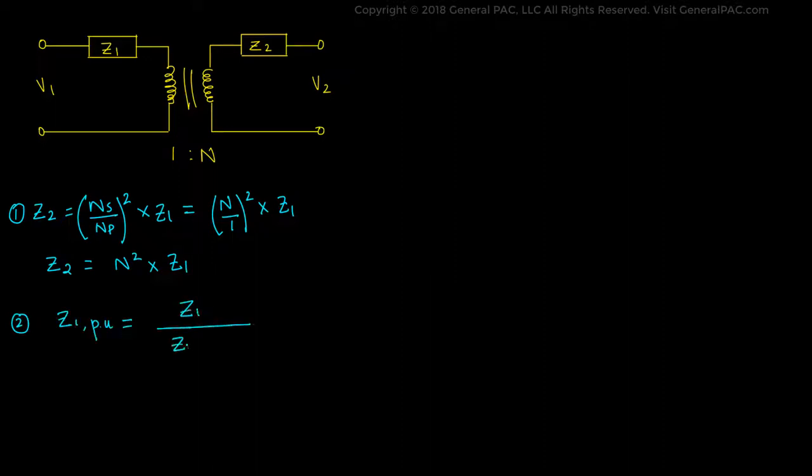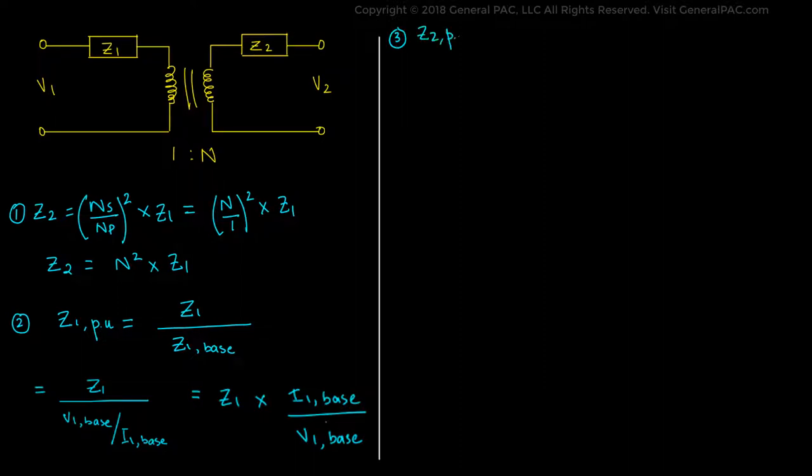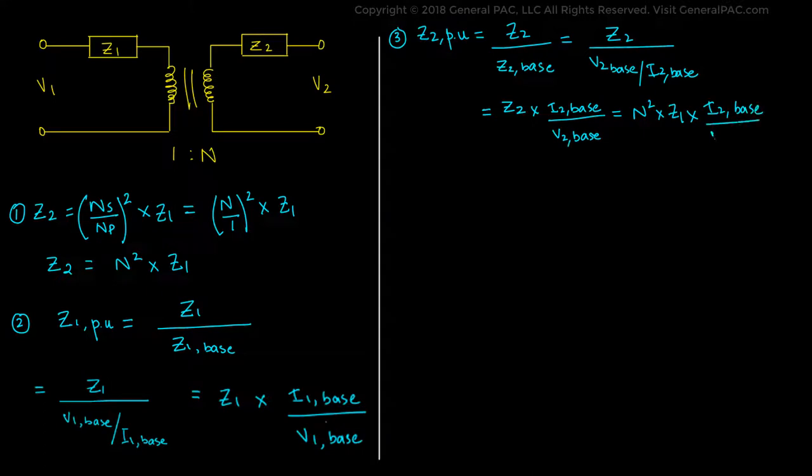That equals Z1 times I1,base divided by V1,base. And as we substitute the value of Z2, we get Z2,PU equals Z2 divided by Z2,base, which equals Z2 divided by V2,base over I2,base. That equals Z2 times I2,base over V2,base, which equals N squared times Z1 times I2,base over V2,base. We know that the formula for transformers that relate turns, voltages, and currents is 1 over N equals V1,base over V2,base, which equals I2,base over I1,base.